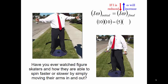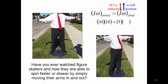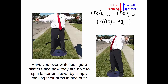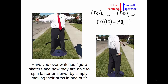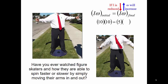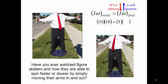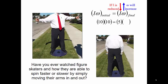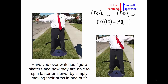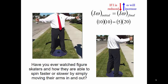For example, if I have a mass moment of inertia of 10 and an angular velocity of 10, and then when I pull my arms in, my mass moment of inertia changes to 5, in order to have conservation of angular momentum, my angular velocity has to go to 20. If my mass moment of inertia were to reduce to 2, then my angular velocity would increase to 50.